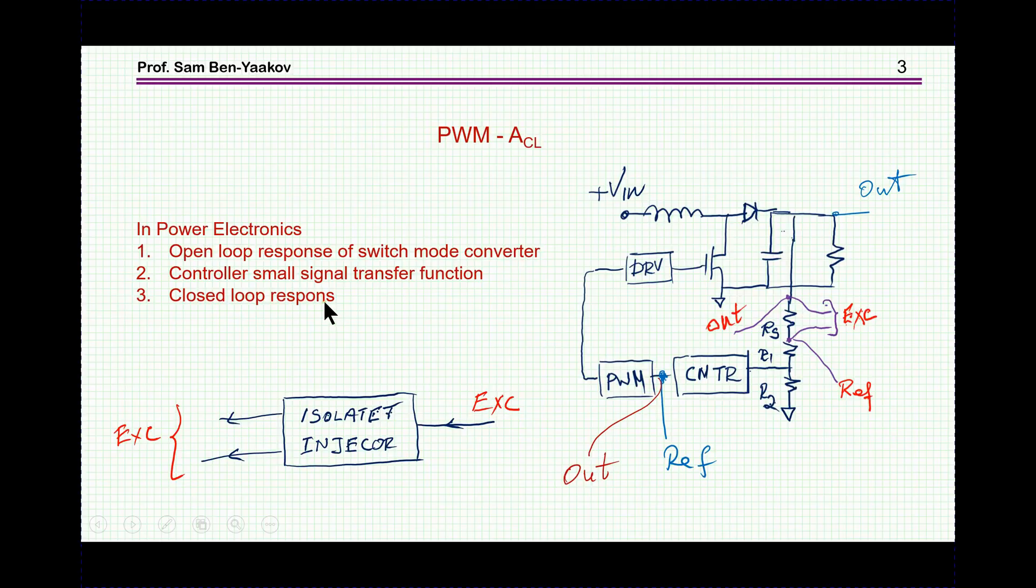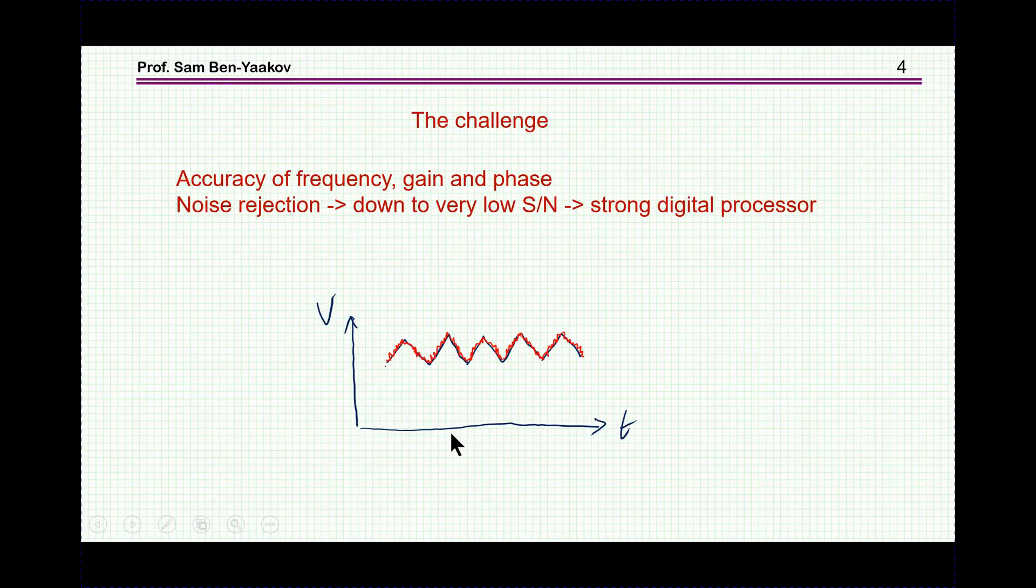So in power electronics we do need the open loop response, the controller, and closed loop response. For this we might need an isolated injector, because many times, especially for the closed loop, we do have to inject the signal into two points here which are not ground. None of them is ground, so you need this sort of isolated interface between the normally single-ended line that will come from the analyzer to the excitation. But this is an auxiliary unit, and I'm not concerned about it. One reason I have not tested this unit on a switch mode converter is because I haven't built yet this isolated injector.